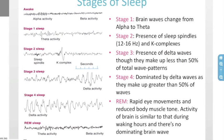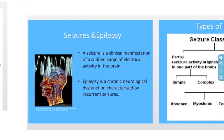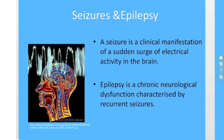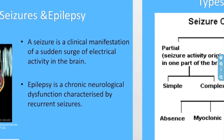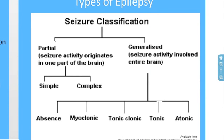These waves can also occur in sleep, and you can see these activities in the different stages of sleep as well as REM. A seizure is a clinical manifestation of a sudden surge of electrical activity in the brain arising from abnormal and excessive excitation and synchronization of a population of cortical neurons. Epilepsy, in contrast, is a chronic neurological dysfunction characterized by recurrent seizures. Seizure types are organized depending upon the location within the brain: in partial seizures, the activity originates in one part of the brain, whereas in generalized seizures, the activity involves entire brain regions.